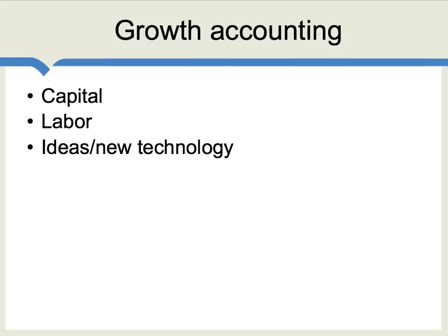One important feature of the Solow model is that it took economic growth and it broke it down very carefully into underlying categories. So in simplest terms, you can think of the Solow model as suggesting that economic growth comes from capital, it comes from labor, and it comes from ideas or new technology.